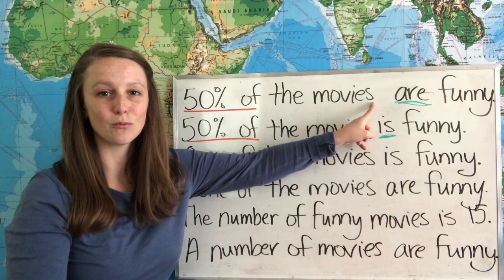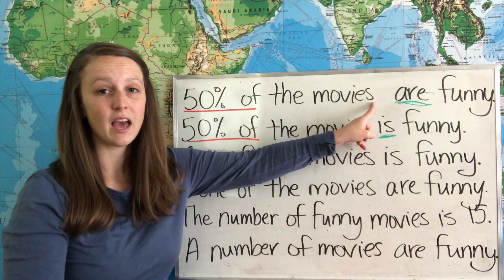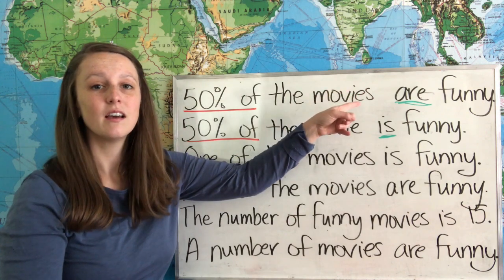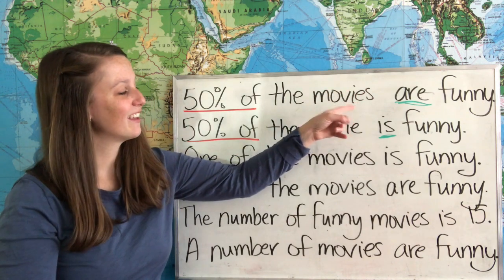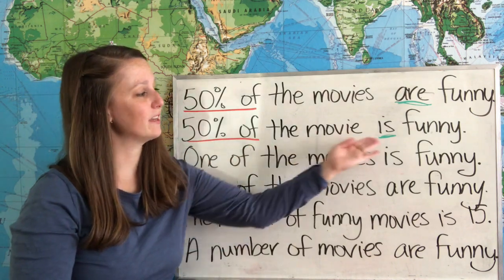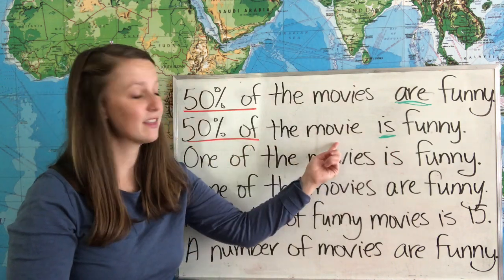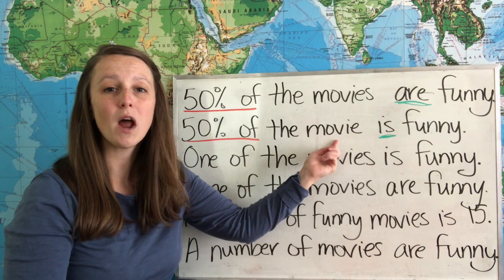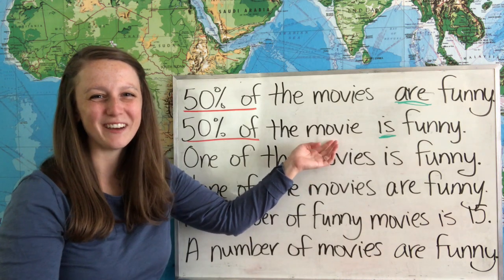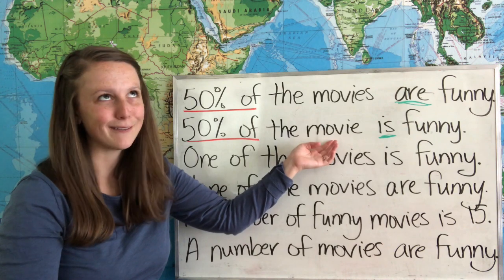That means we're talking about a group of several movies and we're saying 50% of those movies are funny. In this example we're saying 50% of the movie is funny. In this case we're talking about one movie and we think about 50% of that movie is funny. About half of it is not funny at all.